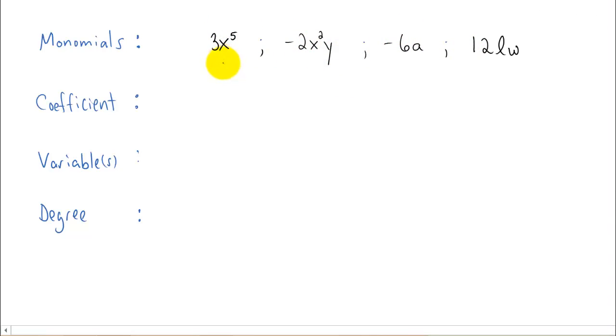Each one has a coefficient. Each one in my examples have variables. And every monomial has a degree. So let's write down what these are for each of these four examples. The coefficient is the number that's on the term. So in this first example, the coefficient is 3.